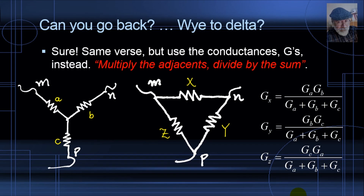These formulas can also be used to convert a star of inductors into a triangle of inductors, but you use the inverses of the inductances — the gammas of the inductors — and you obtain the gammas of X, Y, and Z. You can also use the formulas to convert a star of capacitors into a triangle of capacitors, using the proper capacitances A, B, and C to obtain capacitances X, Y, and Z.